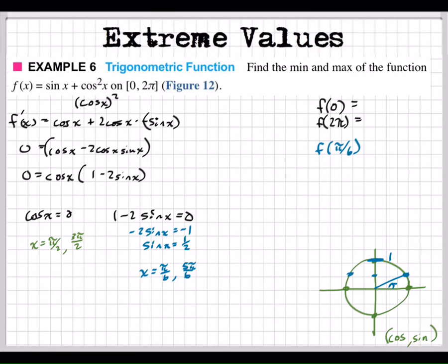So we have to find f of π/6, f of 5π/6, f of π/2, and f of 3π/2 — plus the endpoints f of 0 and f of 2π.